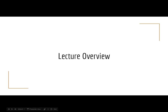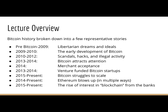A quick overview of the history we'll be covering in this lecture. The different periods in Bitcoin history can be broken down into a few representative stories, each with its own feel and characterization. Before Bitcoin, you have libertarian dreams and ideals which led to the development of Bitcoin. From 2010 to 2012, after Bitcoin got off the ground, was a period of scandals and illegal activity. After that, Bitcoin started to attract attention, gaining merchant acceptance and venture funding. Now in the present we have Bitcoin struggling to scale, the rise of Ethereum as the first alternative cryptocurrency to rival Bitcoin, and renewed interest in blockchain technology from banks and larger financial institutions.